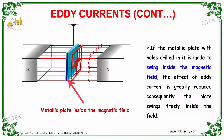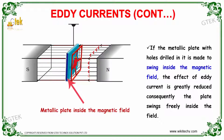You are able to see a conductor — a metallic plate — which is placed inside the magnetic field. If the metallic plate with holes drilled in it is made to swing inside the magnetic field, it is swinging. The effect of the Eddy Current is greatly reduced. Consequently, the plate swings freely inside the field.